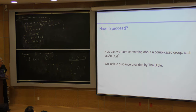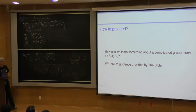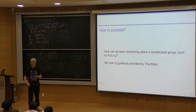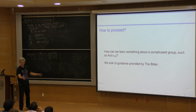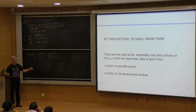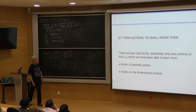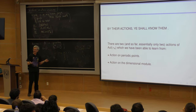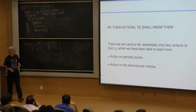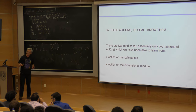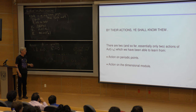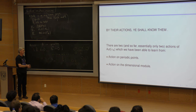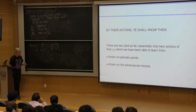How can we learn something about a complicated group like the automorphism group? By their actions, you shall know them. How do you learn about a group? You look at how it acts. For this group, there are basically only two actions from which we've really been able to learn something: one is the action on periodic points, and the other is the action on the dimension module — and we learn especially by relating these two actions to each other.